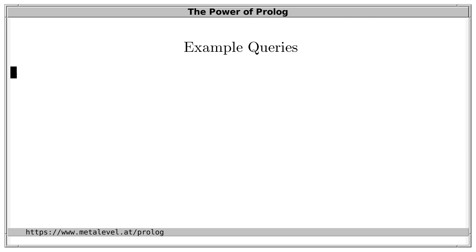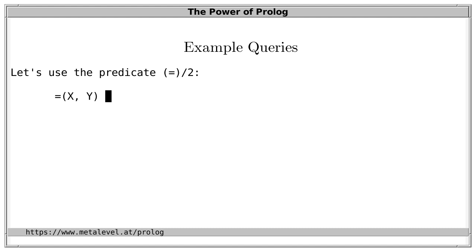As you know, when we start the Prolog system, several predicates are already predefined. For example, let's take the predicate equals with two arguments. Equals of x and y — or in operator notation, x equals y — is true if its arguments are equal, that is, if x is equal to y.